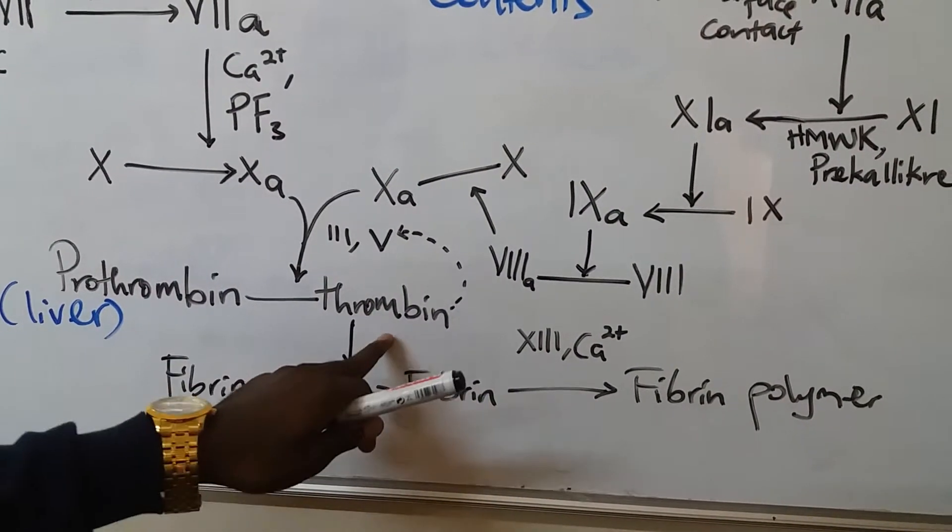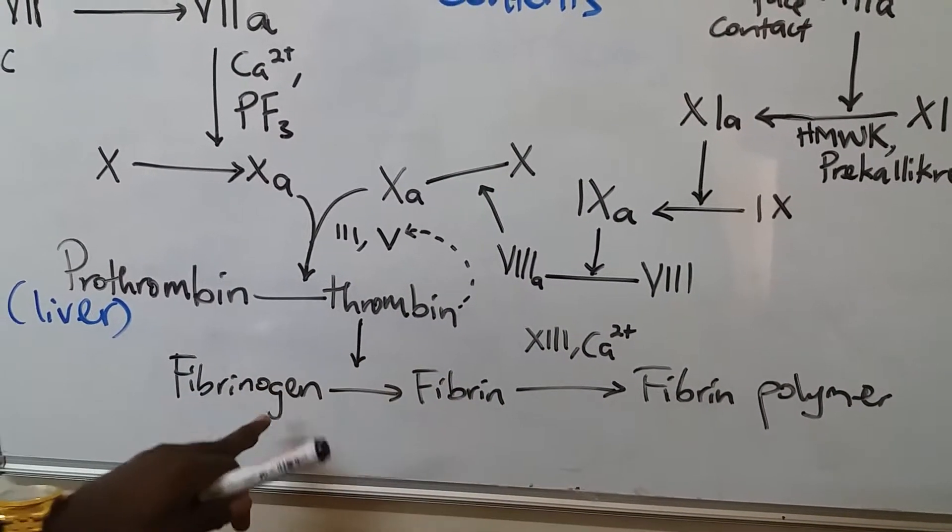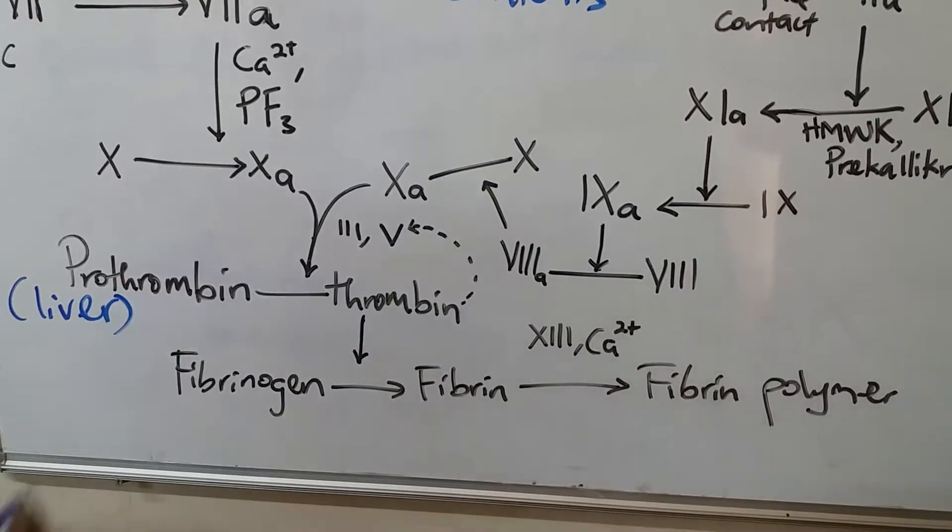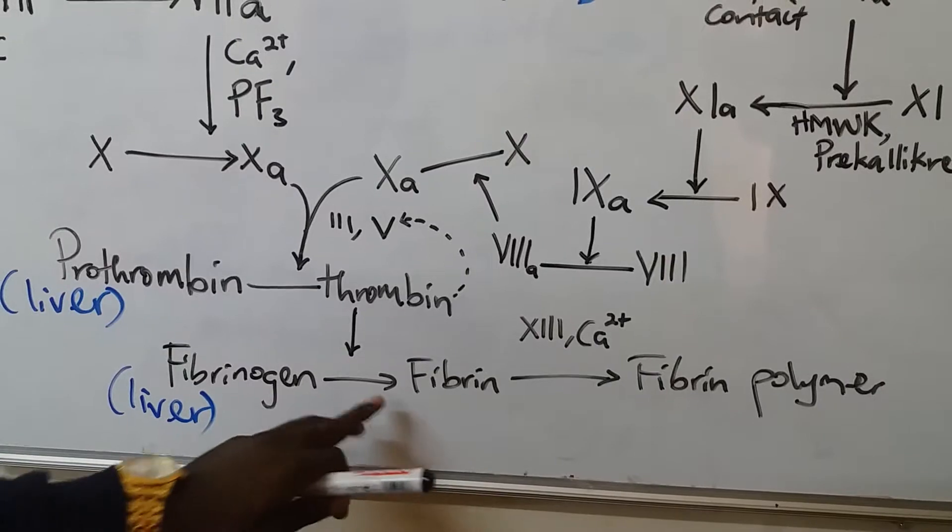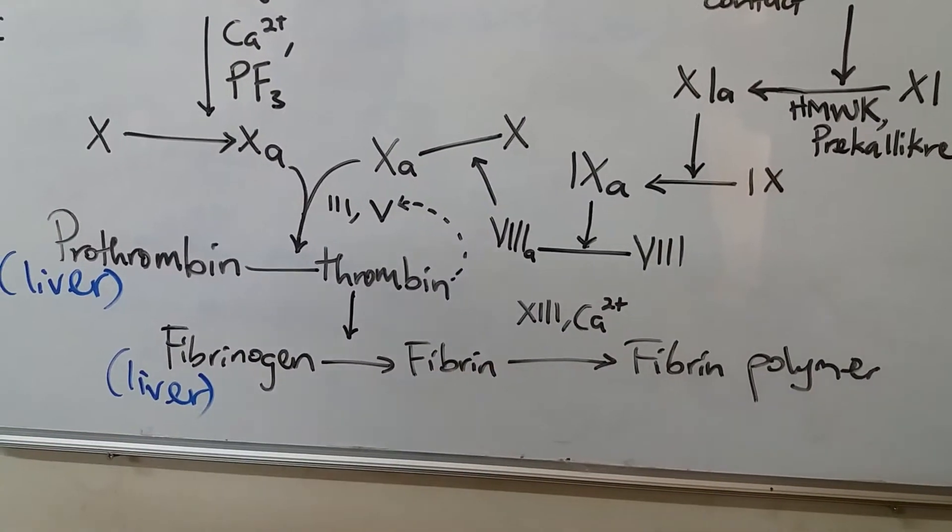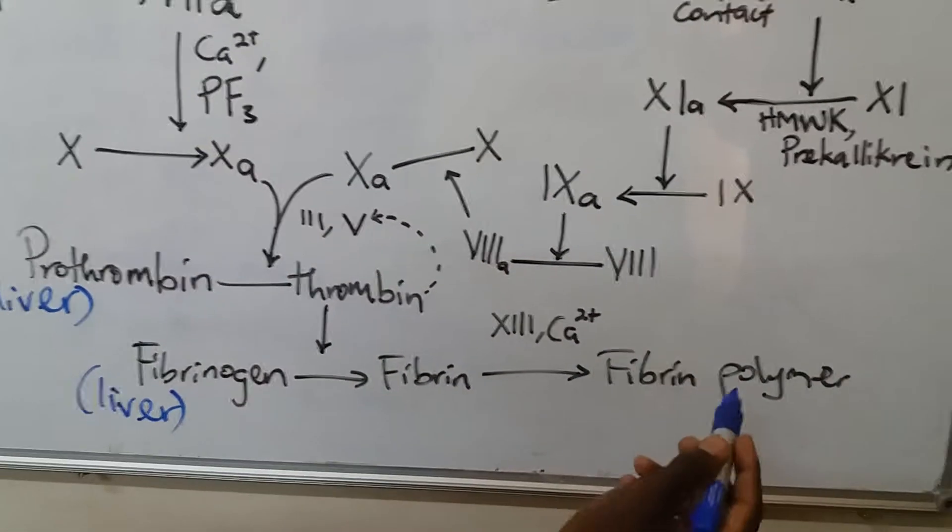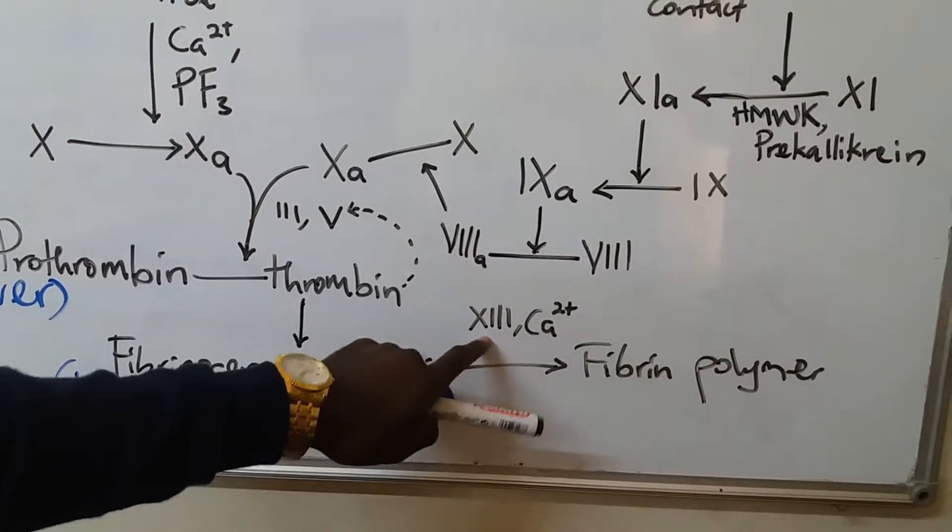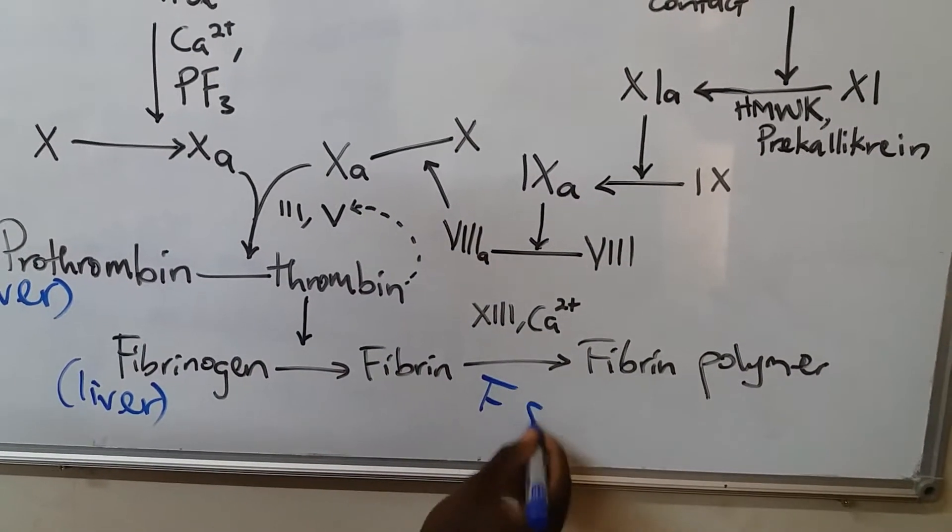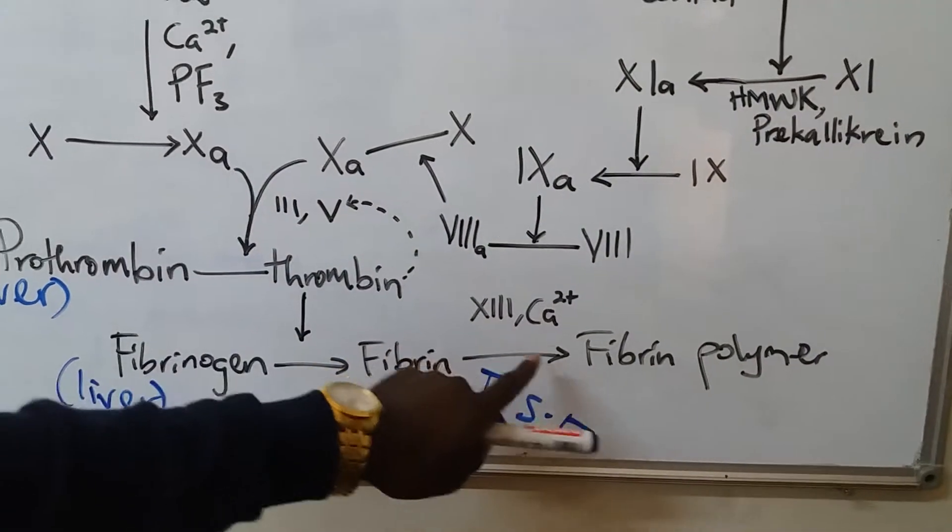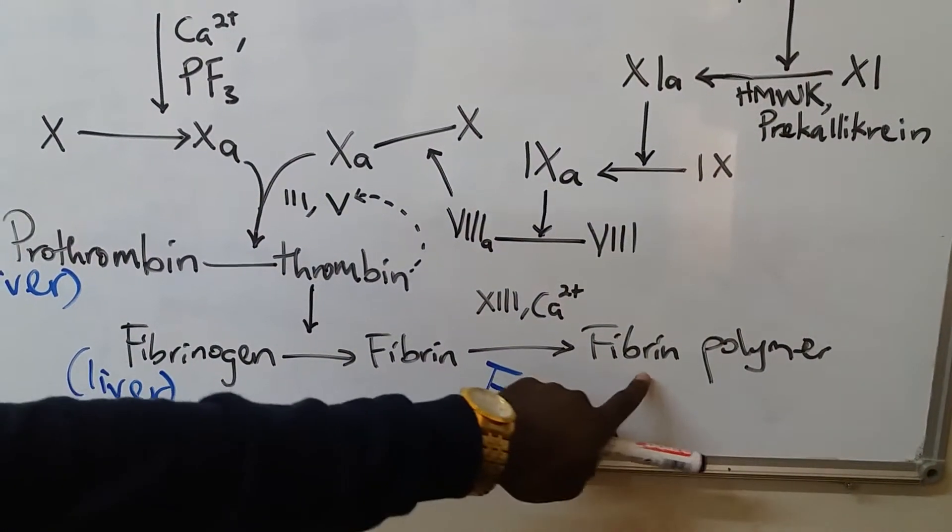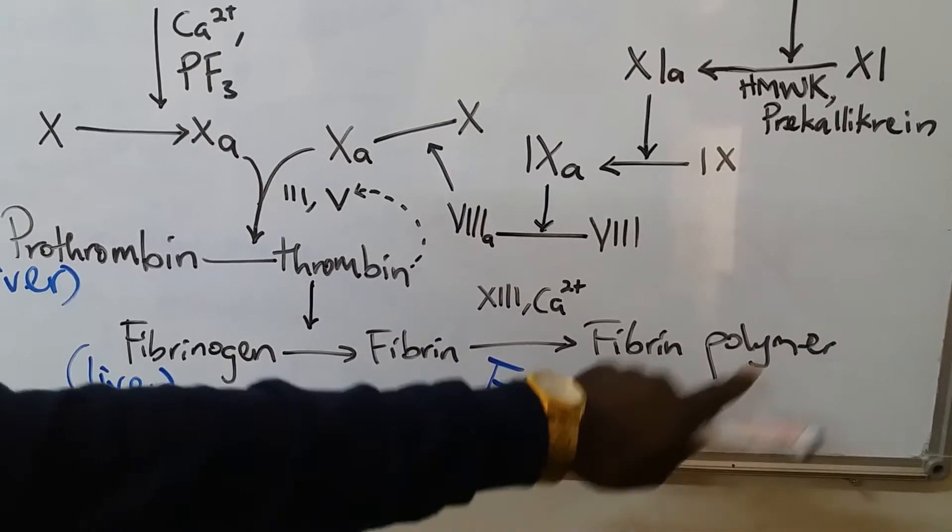After thrombin, we shall activate fibrinogen. Fibrinogen is also from the liver. Fibrinogen will be activated to fibrin. Fibrin will be forming fibrin polymer in the presence of fibrin stabilizing factor, which is also factor 13, in the presence of calcium. Finally, we shall have the fibrin polymer.